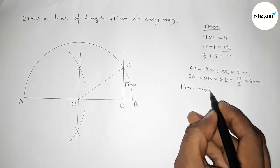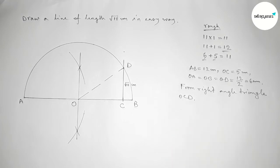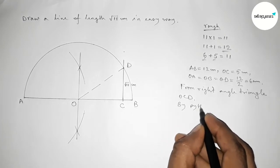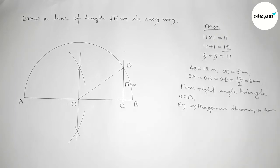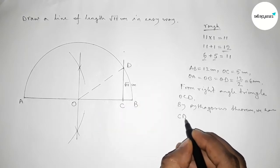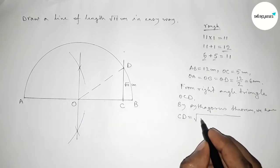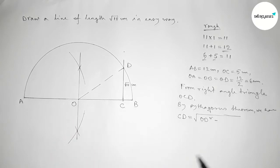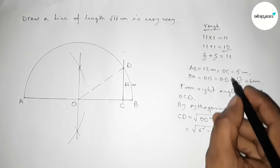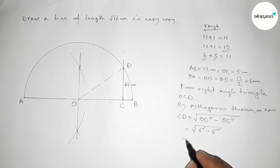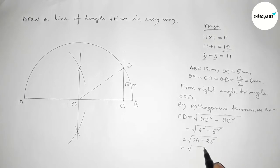from right angle triangle OCD, I am going to apply Pythagoras' theorem to find out the perpendicular CD. By Pythagoras' theorem, perpendicular equals to root over hypotenuse squared minus base squared. So CD equals to root over OD squared minus OC squared, which equals to root over 6 squared minus 5 squared, that is root over 36 minus 25.